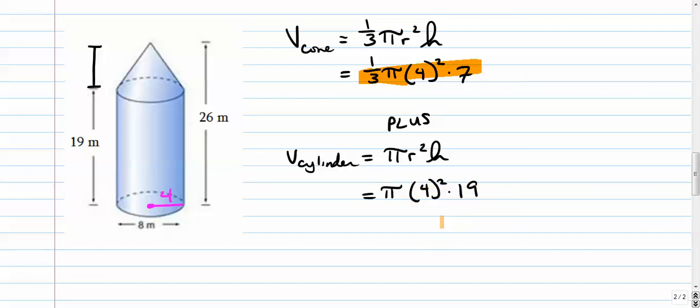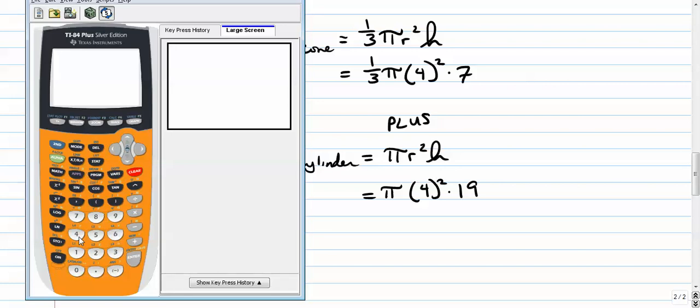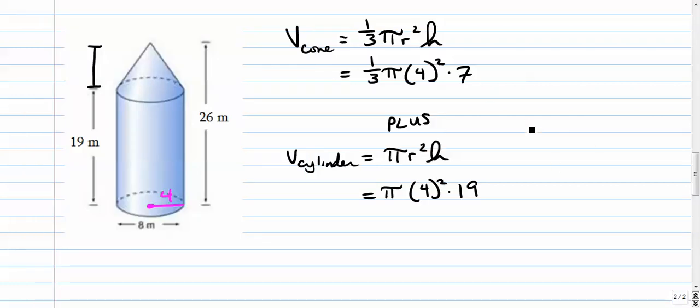It's just 19. So we're going to simply add those two things together, right there and there. And I'll do it all at once in my calculator. So let's see, we have 1 divided by 3 times pi times 4 squared is 16 times 7 plus 4 squared is 16 pi times 19. So I get 1072.330. And that is in cubic meters. That's volume of the whole thing.